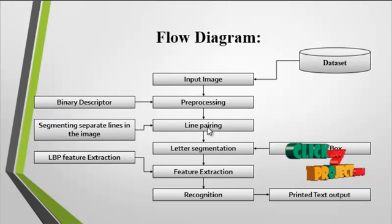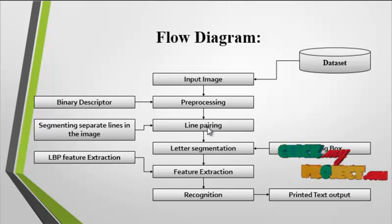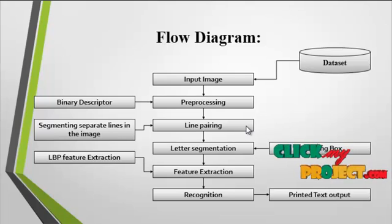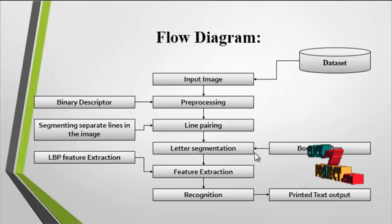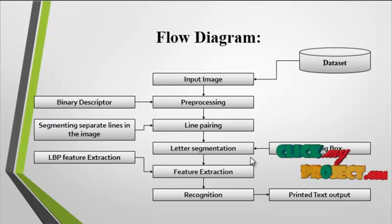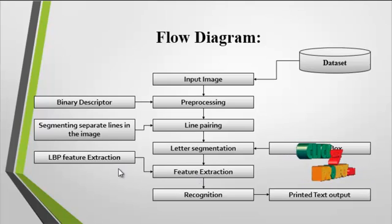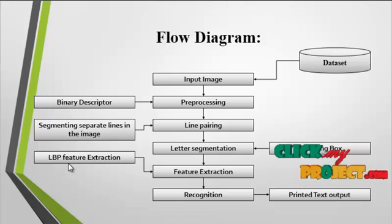In the line pairing, if we have two or more lines, the lines are paired first. After segmenting the line pairing, the letter segmentation is carried out. In the letter segmentation, bounding box segmentation is applied for each and every character. After the bounding box segmentation, the feature extraction is carried out. In the feature extraction, we apply the LBP feature extraction. LBP is nothing but the local binary pattern.